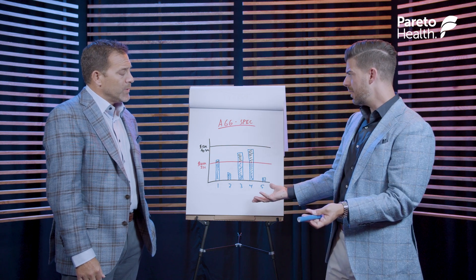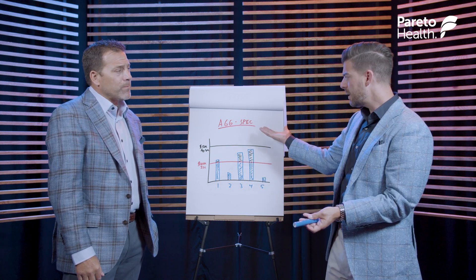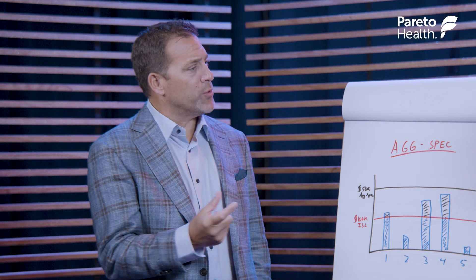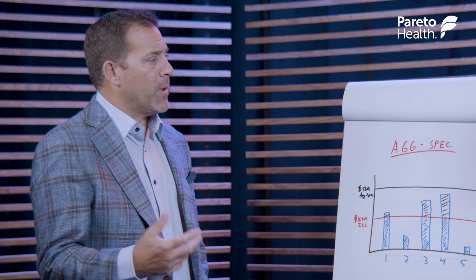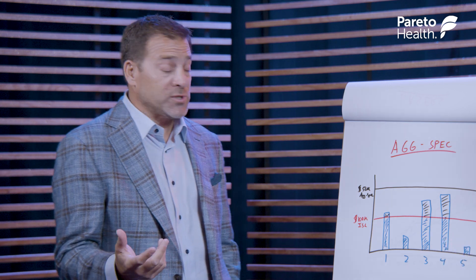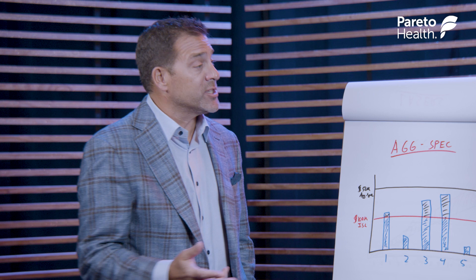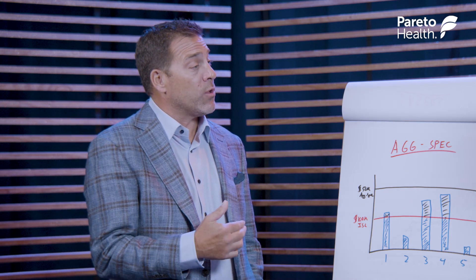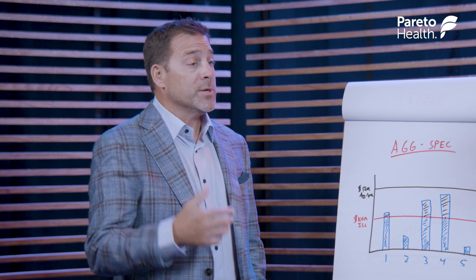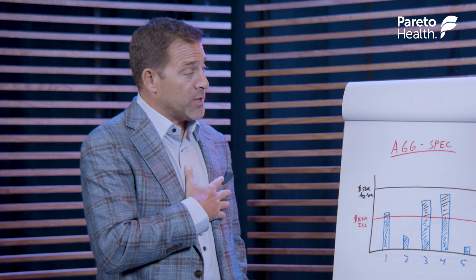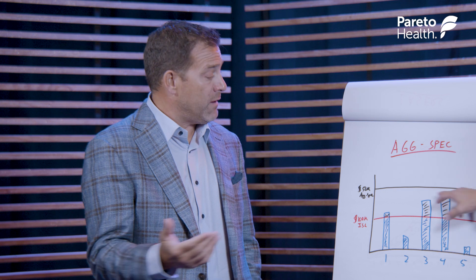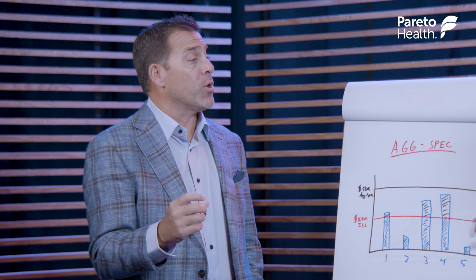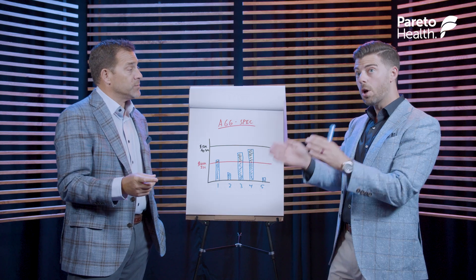Why would we do it though? There are a couple different reasons. First, let's start with the employer. Why as an employer would I buy an aggregating specific? Well, the first is that whatever that aggregating specific limit is — in this case $50,000 — the stop-loss carrier will often give you a dollar-for-dollar credit on the premium. So if I pay $300,000 worth of stop-loss premium and I want to employ a $50,000 aggregating specific, that premium now comes down to somewhere in that $250,000 range. So it's lowering my fixed costs.